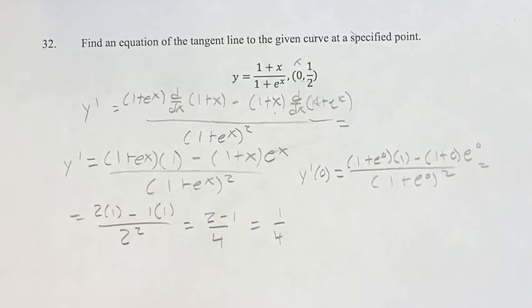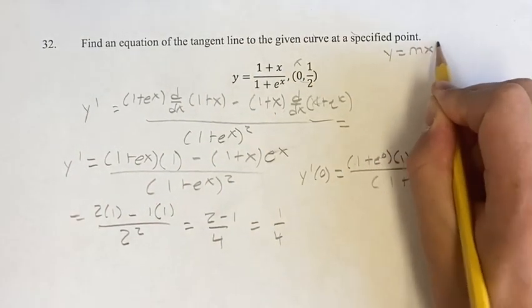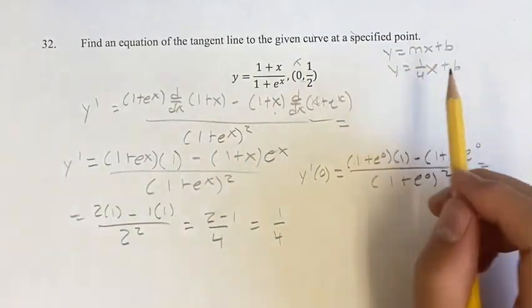So this is the slope of the tangent line at the given point. If we have the equation y equals mx plus b, we know that it's y equals 1/4 x plus b. We know this equation is true for this point.